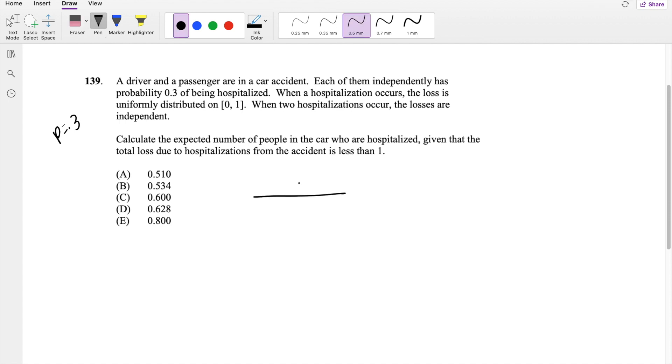So the possible scenarios - if there's a driver and a passenger, this is D by the way - a driver can be hospitalized and the passenger be okay, or backwards, driver could be okay and the passenger is hospitalized, or they could both be hospitalized, or they could both be okay. Those are my four choices, right?